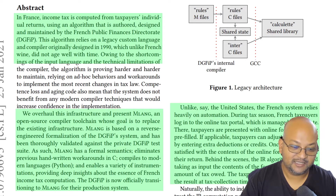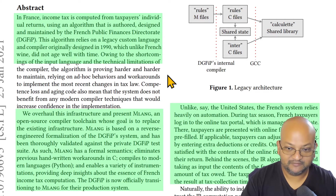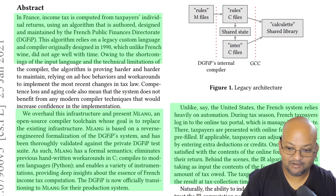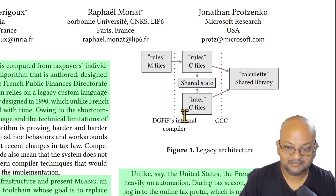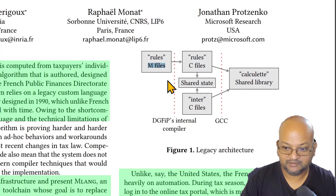The amazing thing is that the French government department that handles taxes — the French public finances directorate — has an algorithm that computes the tax bills of individuals. Taxpayers log on to the system, fill out some forms, and the system tells them how much taxes they owe. The whole thing is fully automated. The tax code is specified in a domain-specific language called M, which lets you write rules with declarations, variables, and computations on those variables. And M compiles down to C.